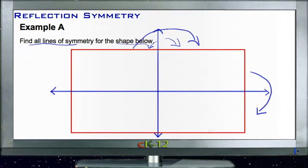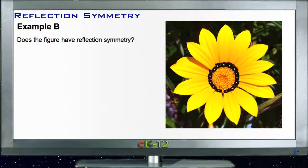Okay, so just two lines of symmetry for a rectangle. Example B says: does the figure have reflection symmetry?